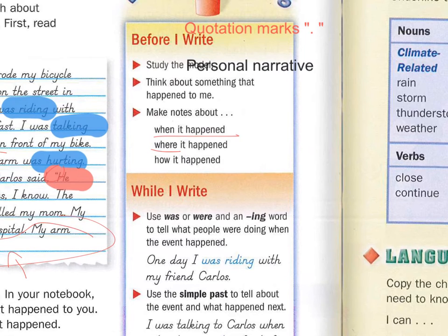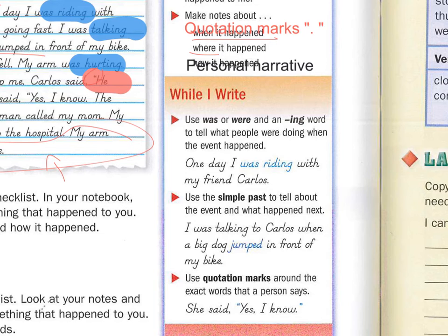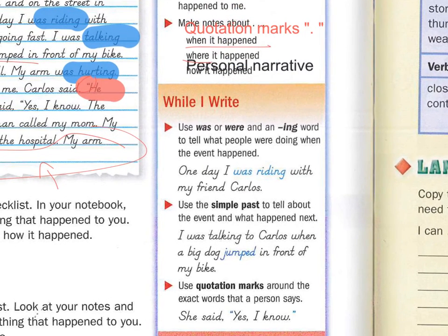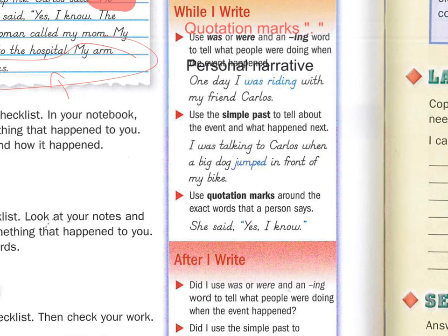You are going to think about something you can write about from your life — a personal narrative. When did it happen? Where? And how? We're practicing was and were with the -ing verbs. And you can use the simple past tense to tell what actually happened — 'A big dog jumped in front of my bike.' Use quotation marks around the exact words that a person says. Thank you.